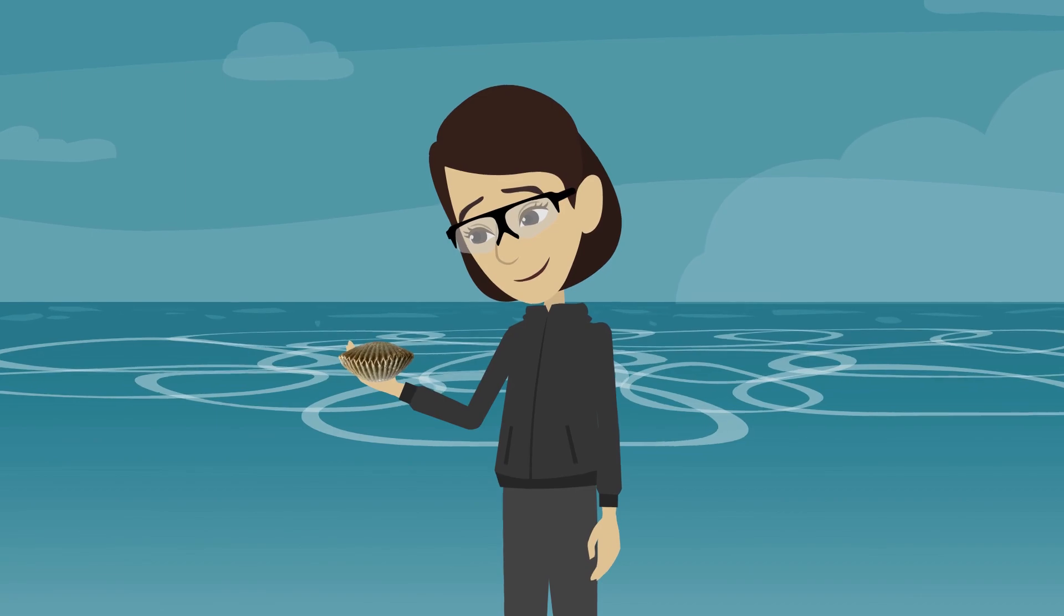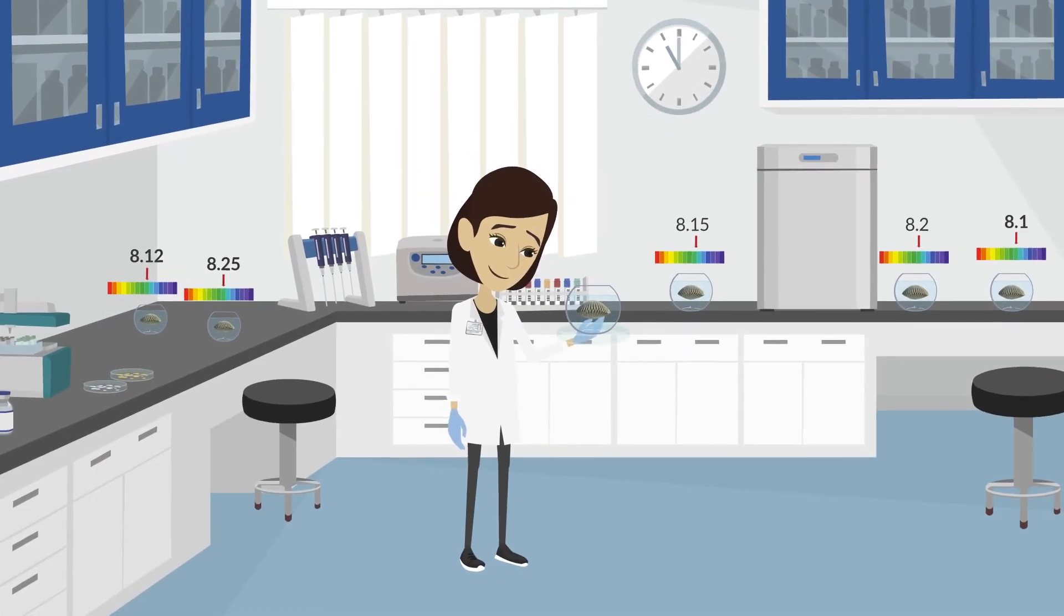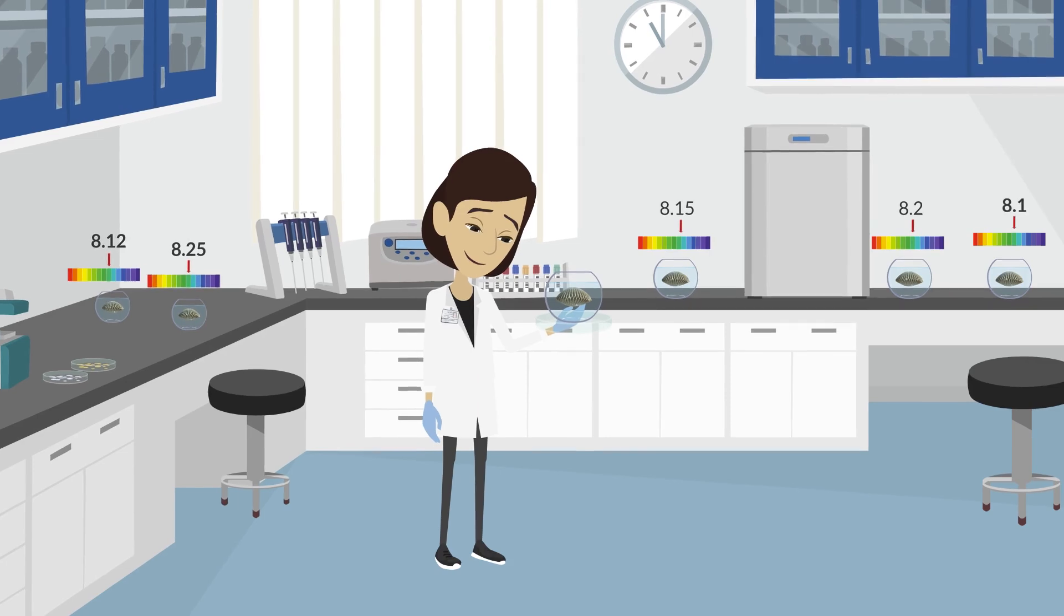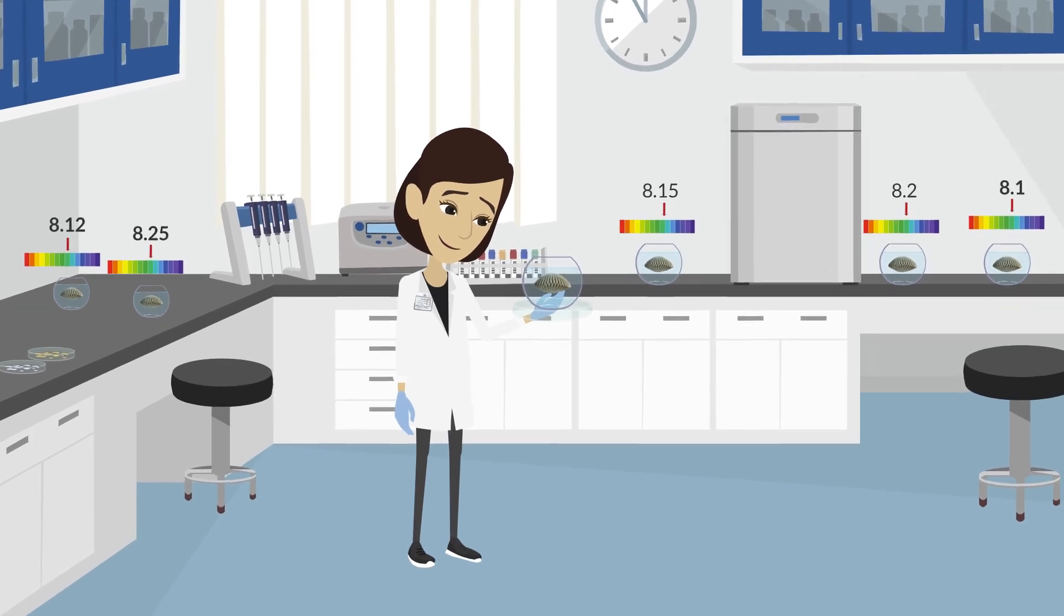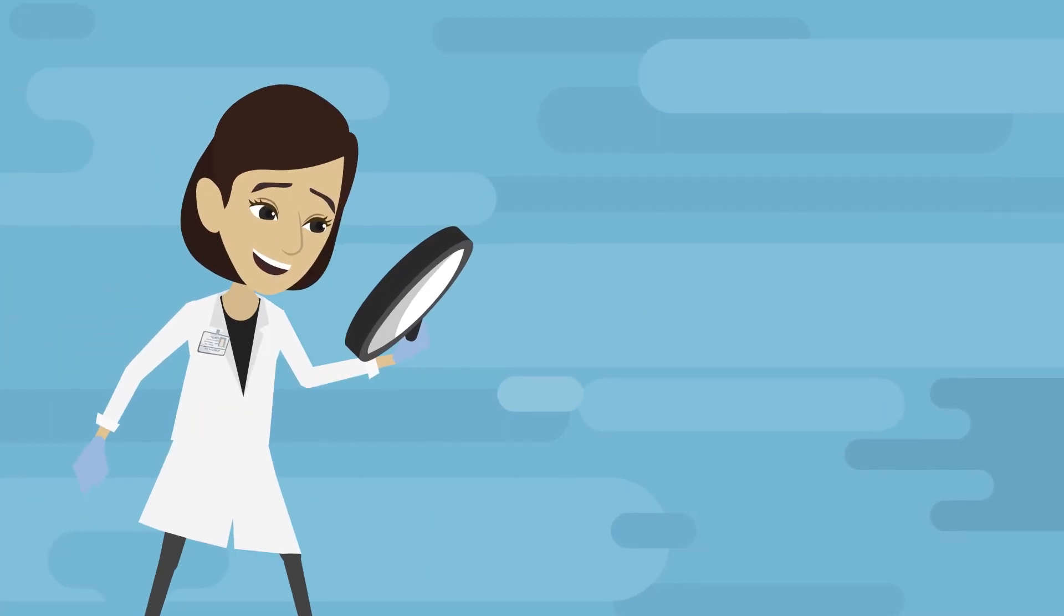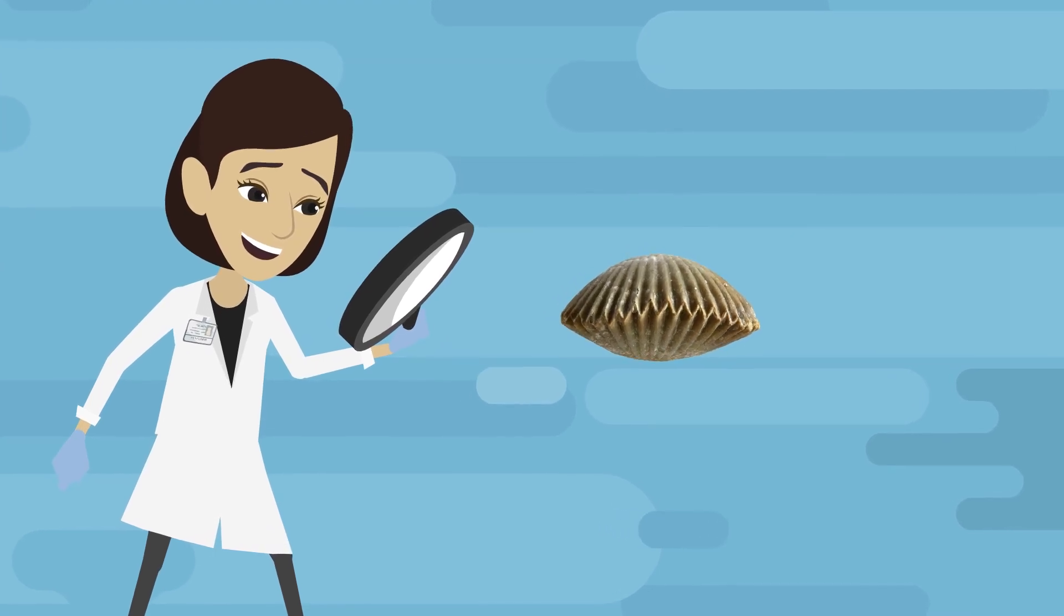Susan collects bivalves from the ocean and grows mussels and oysters in the lab to see how they respond to seawater of different acidities. In particular, Susan is investigating how a bivalve's shell building process is altered.